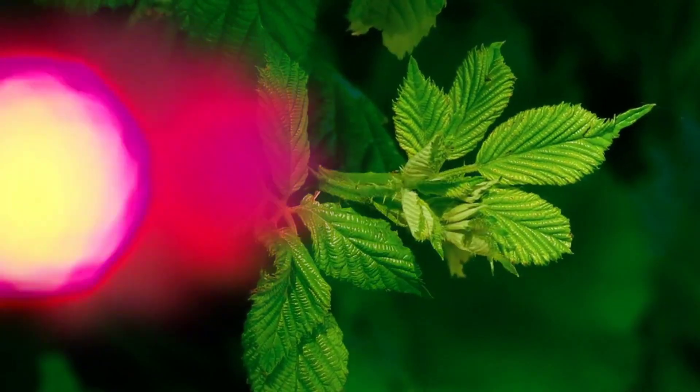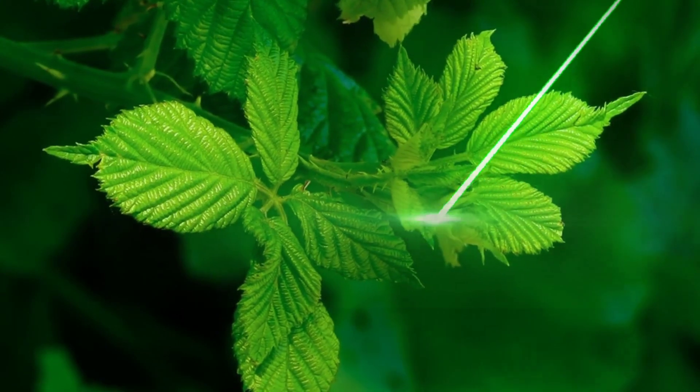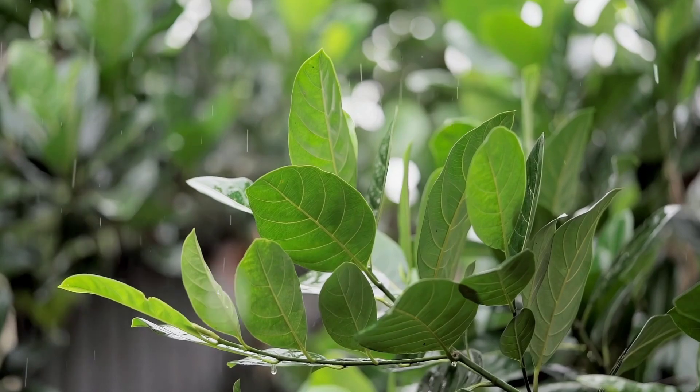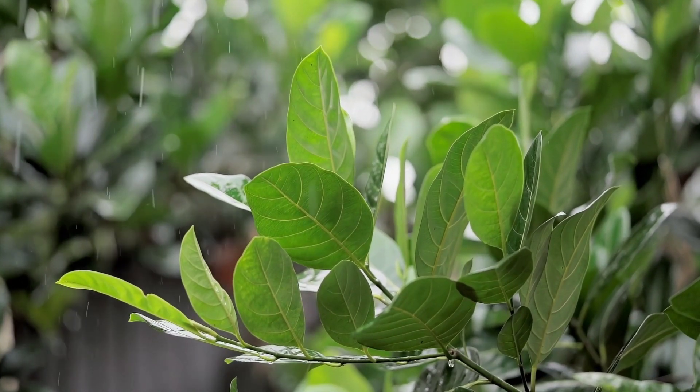Green leaves primarily absorb light in the red and blue wavelengths while reflecting green light. That's why they appear green to our eyes. In daylight conditions, the green leaf will primarily reflect green light while absorbing other wavelengths.